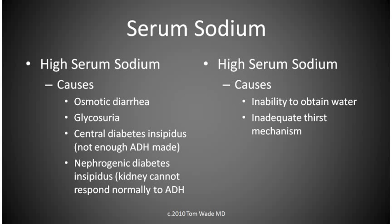In central diabetes insipidus, the serum sodium is high because the kidneys cannot absorb water adequately because the level of antidiuretic hormone is too low. In nephrogenic diabetes insipidus, the level of antidiuretic hormone is adequate, but the kidneys are unable to respond to it normally and so don't absorb enough water from the urine. Thirst is a powerful mechanism that usually kicks in when the serum sodium starts to get high. However, if a person is too weak to drink, the serum sodium can continue to rise. Rarely, the thirst mechanism itself is damaged and the person doesn't drink enough fluid.